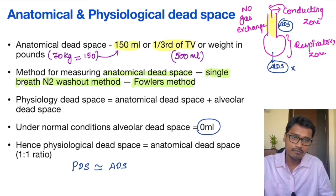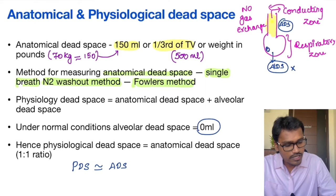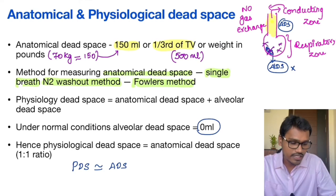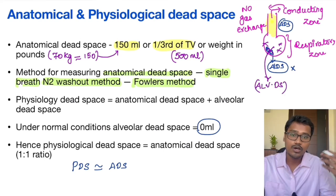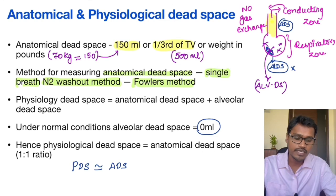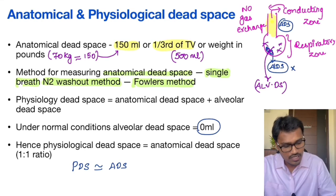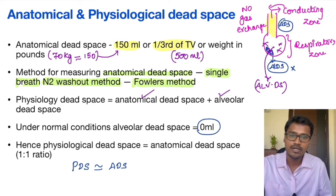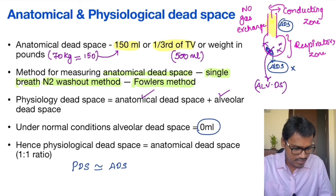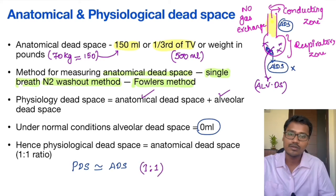But if somebody has a respiratory or lung disorder wherein some of the alveoli are not functioning, it will create alveolar dead space, so the physiological dead space will be increased — because physiological dead space is the sum of anatomical dead space and alveolar dead space. In a normal subject, the ratio between physiological and anatomical dead space is 1:1.